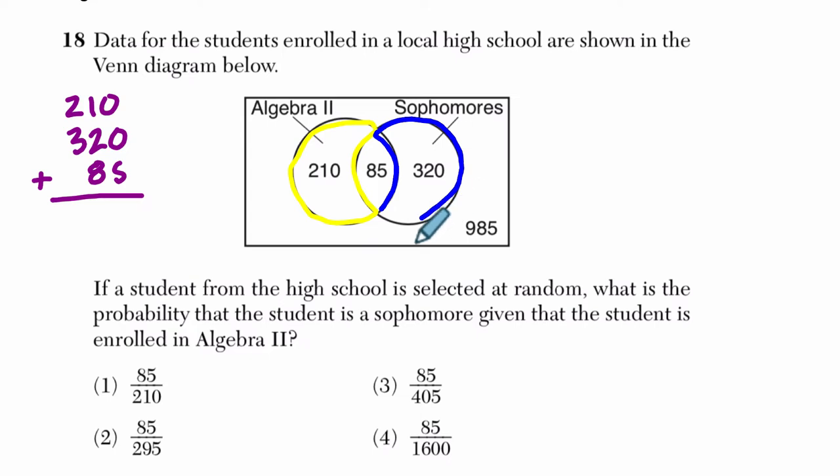They're sophomores, but they're not in the intersection, not in both, and the 85 is referring to this region right here, students who are both in algebra 2 and sophomores. So I want to count those three numbers, add them up,